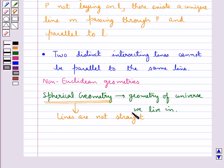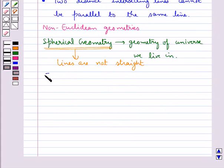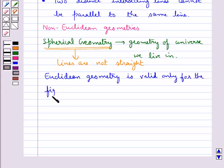they are basically parts of great circles, and thus we say that Euclidean geometry is valid only for the figures in the plane. On the curved surfaces, it fails.